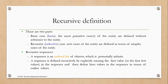Every recursive definition will have two parts. First is the basic case, and second is the recursive case. The most primitive cases of the entity are defined in the basic case — they do not refer to the entity itself. Whereas in the recursive case, the new cases of the entity are defined in terms of simpler cases by referring to the entity itself.